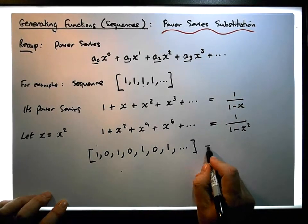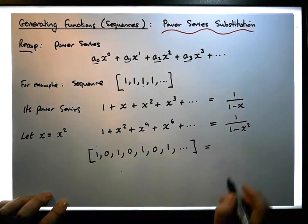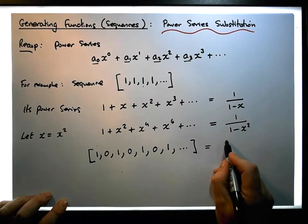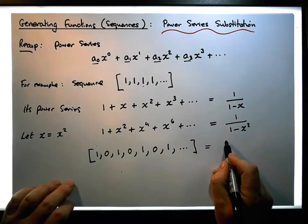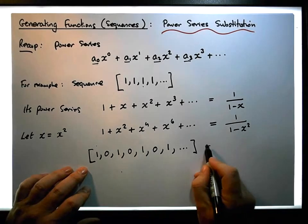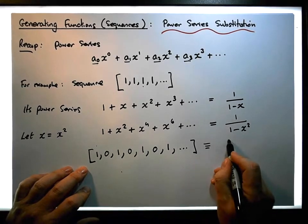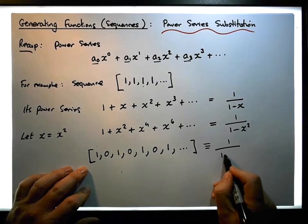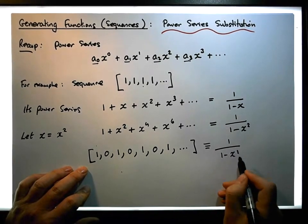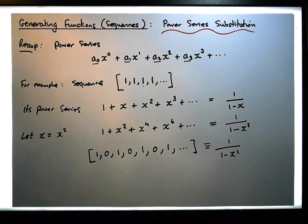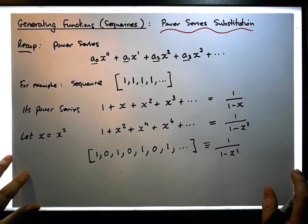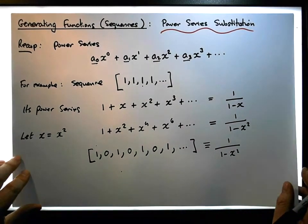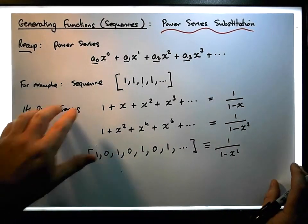...and so on, which gives us what's associated with that. Its generating function is 1 over 1 minus (−x²), which is 1 over 1 plus x².